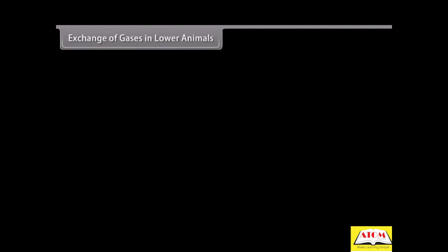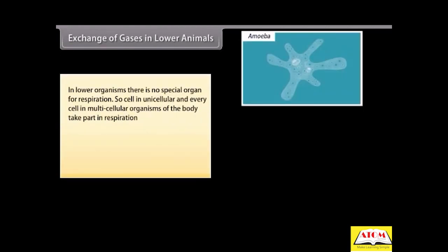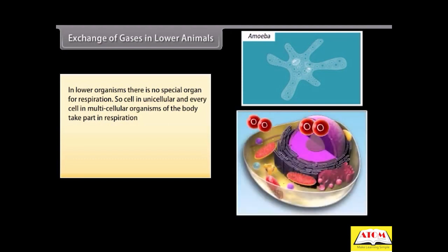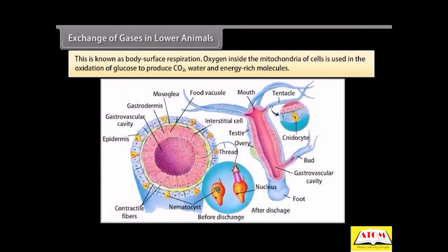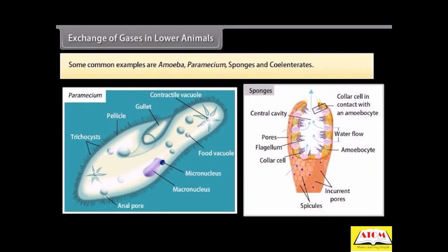Exchange of gases in lower animals. In lower organisms, there is no special organ for respiration. So, each cell in unicellular and every cell in multicellular organisms of the body take part in respiration. Every cell is in direct contact with water. Therefore, there is direct exchange of oxygen of surrounding water and carbon dioxide of body cells. This is known as body surface respiration. Oxygen inside the mitochondria of cells is used in the oxidation of glucose to produce CO2, water, and energy-rich molecules. Some common examples are amoeba, paramecium, sponges, and coelenterates.